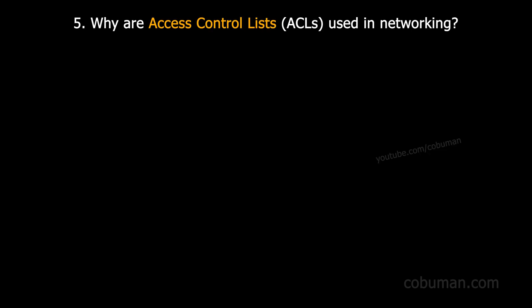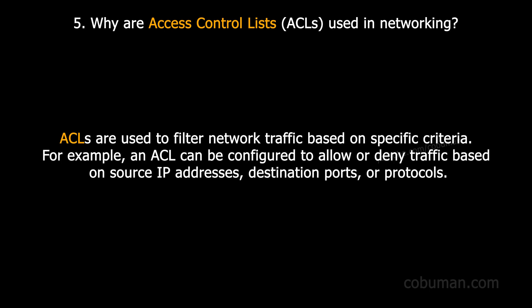Question number five: why are access control lists used in networking? ACLs are used to filter network traffic based on specific criteria. For example, an ACL can be configured to allow or deny traffic based on source IP addresses, destination ports, and protocols.